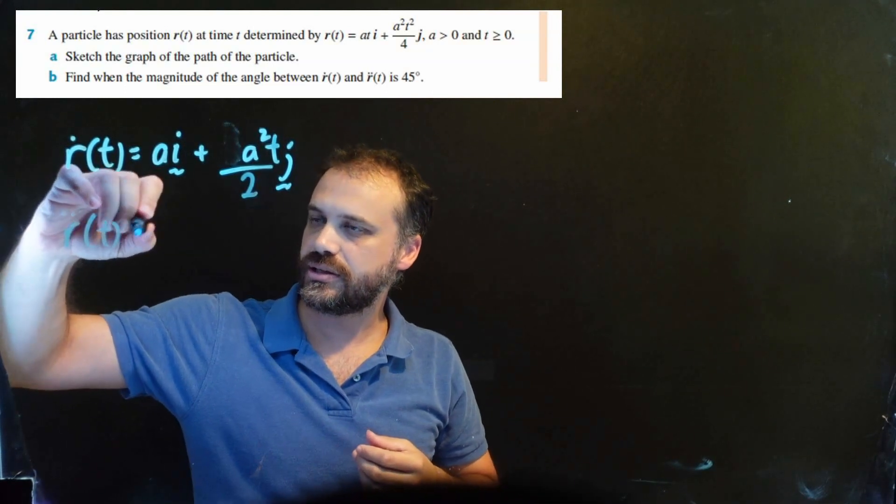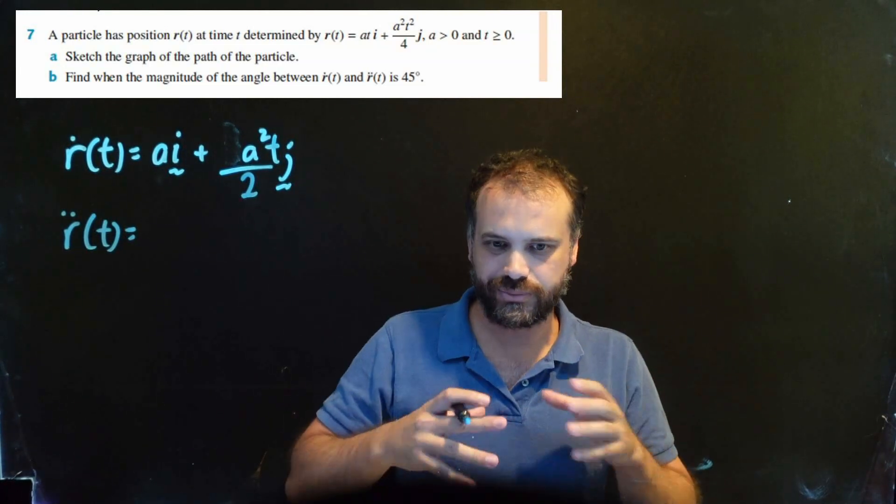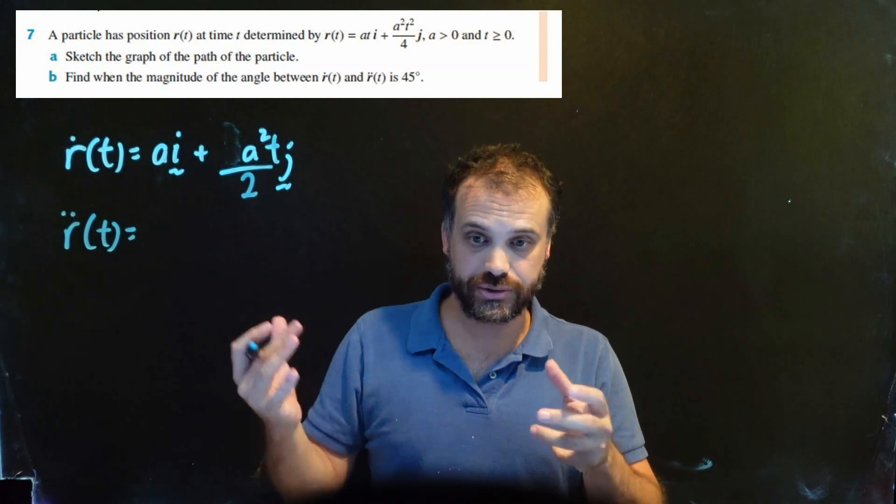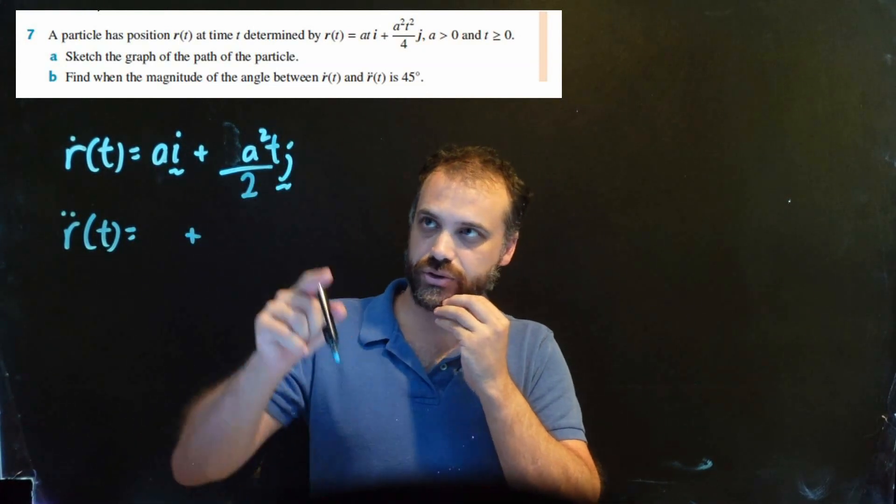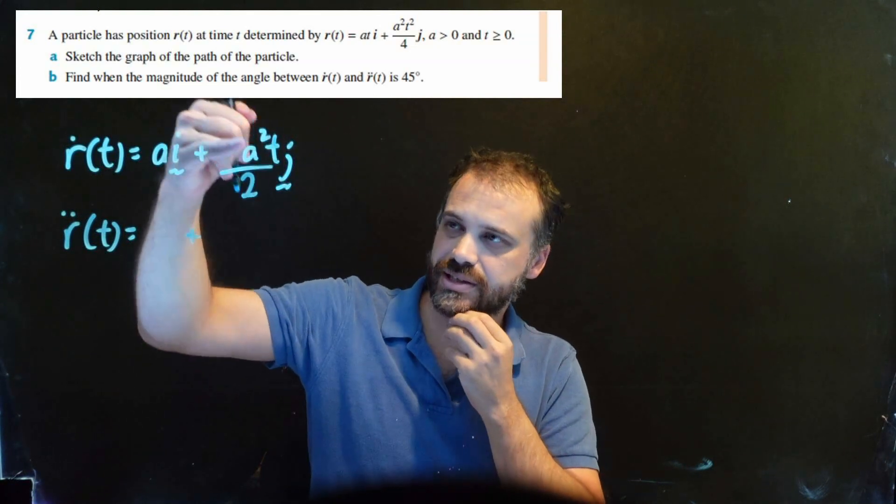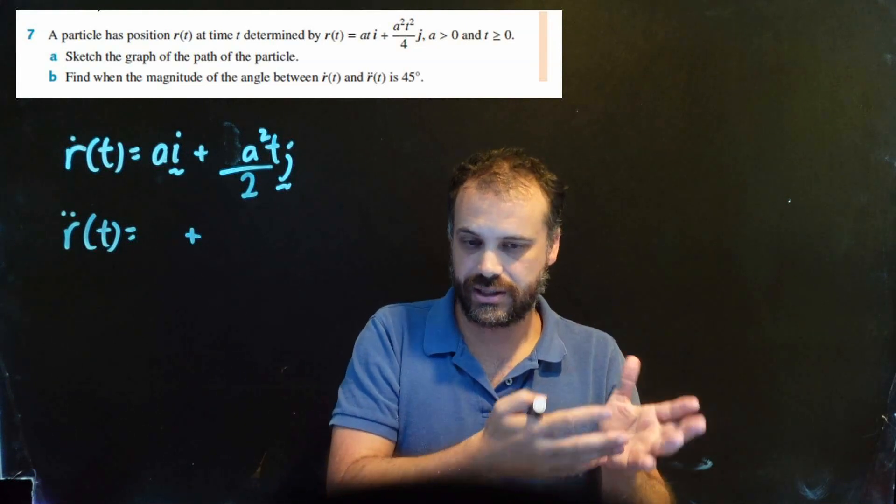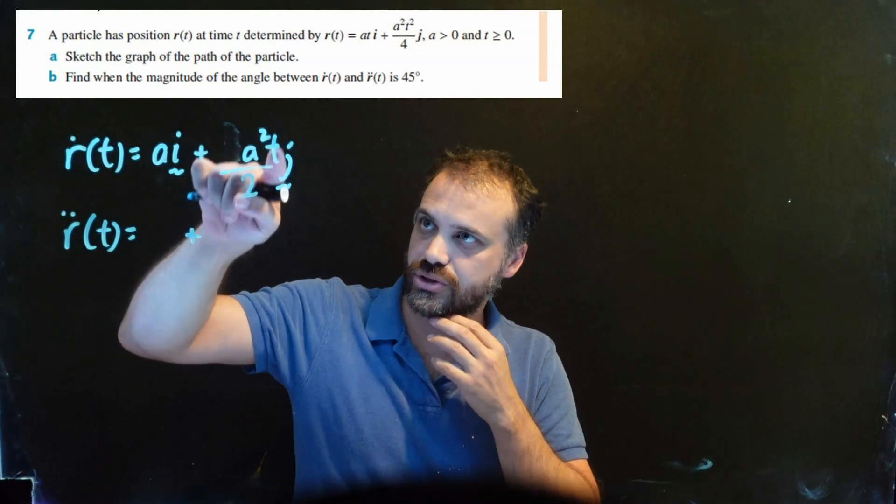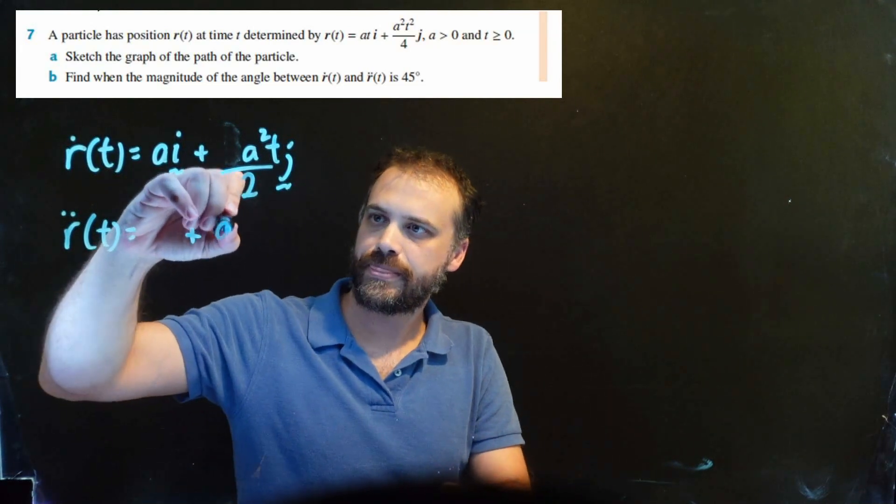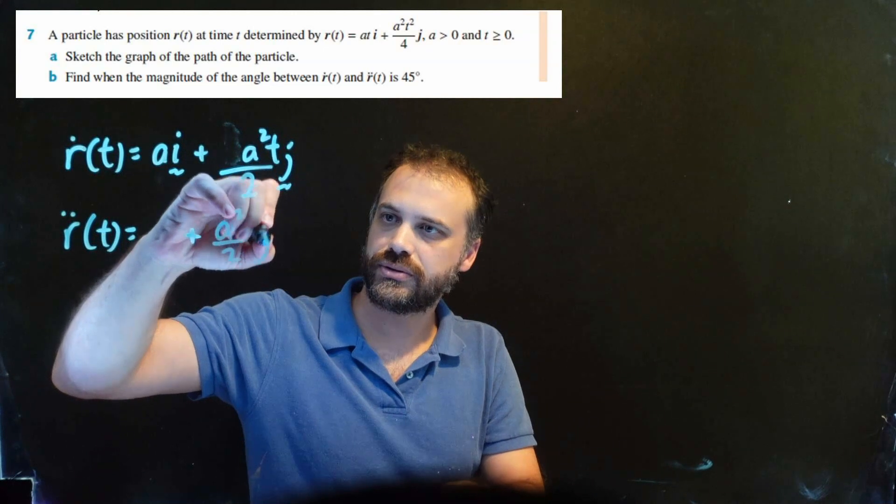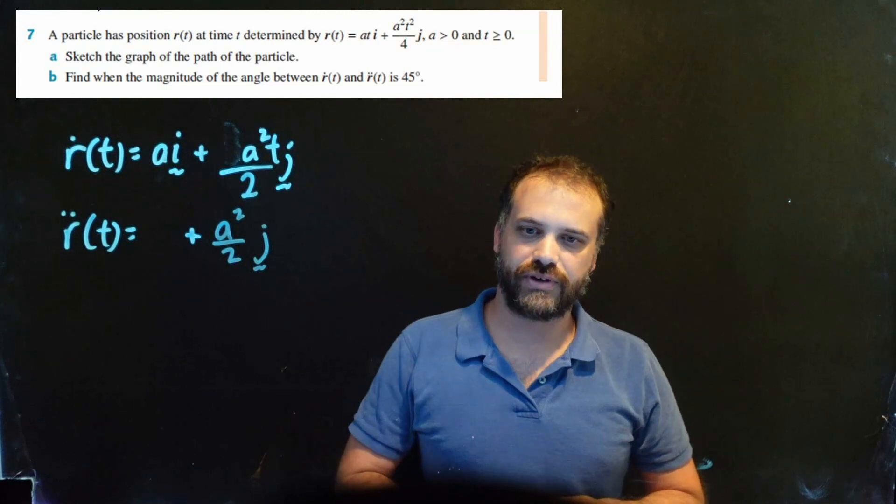r dot dot t is going to be equal to - what's the derivative of 5i? Well, nothing. The derivative of ai is also nothing. So we're just going to have our j component here. Now, the derivative of this says half a squared t, or a squared on 2 t. That's probably a better way to think about it. a squared on 2 is a number, t is there. The derivative of a number times t is just the number. a squared on 2 j. Great. Velocity function, acceleration function.